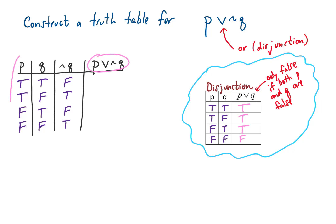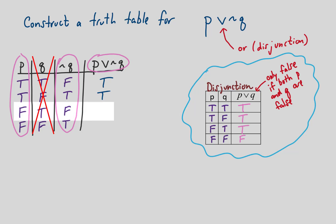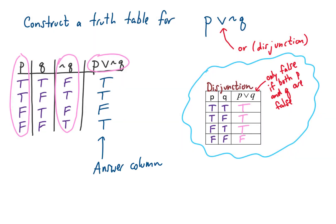Now we fill out the 'not q' column by looking at all truth values for q and switching them, giving us the negation of q. To find truth values for 'p or not q,' we look at the columns for p and not q and apply the disjunction table. Row one: true or false gives true. Row two: true or true gives true. Row three: false or false gives false. Row four: false or true gives true. This answer column is the result, showing how we use the four basic truth tables to construct our own.